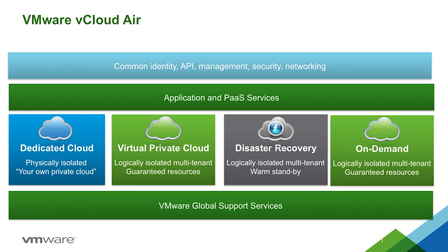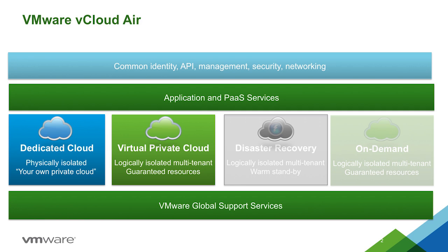vCloud Air comes in four different offerings. First, we have the dedicated and virtual private cloud. With a dedicated and virtual private cloud, you reserve data center resources to run virtual machines. Those resources are compute, memory, storage, and bandwidth. Resources are purchased on a subscription basis anywhere from 30 days to three years.